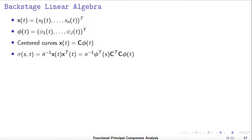The covariance function sigma s of t will be equal to 1 over n times s times s transpose. This is equal to 1 over n times c transpose phi transpose times phi times c transpose times c times phi of t — where this part should be s.